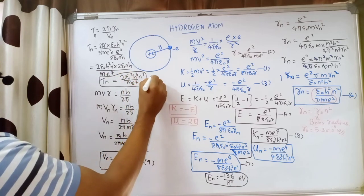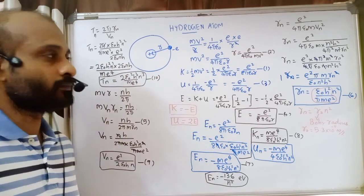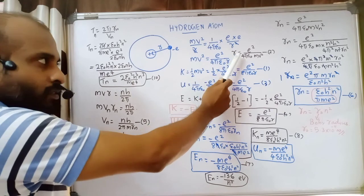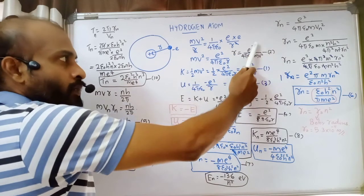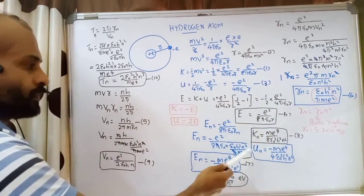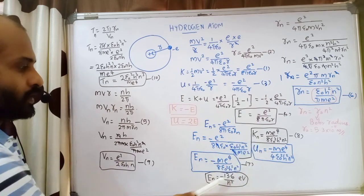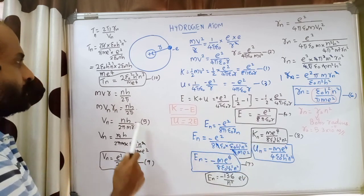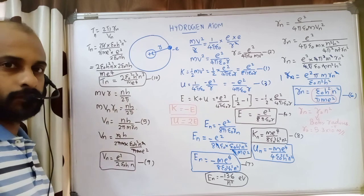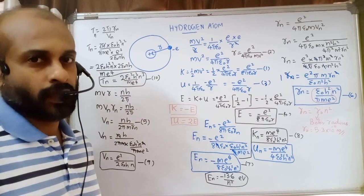In summary, we have derived many equations for the hydrogen atom: kinetic energy, potential energy, total energy, the general radius formula, the radius of the nth orbit, total energy in the nth orbit equal to minus 13.6 by n squared eV, velocity in the nth orbit, and time period in the nth orbit. In the next session we will see the atomic spectra of the hydrogen atom.